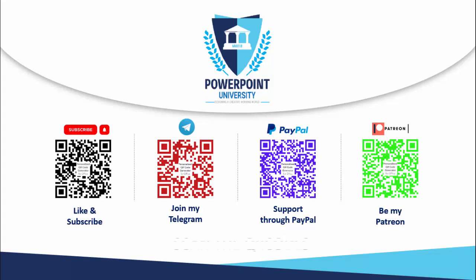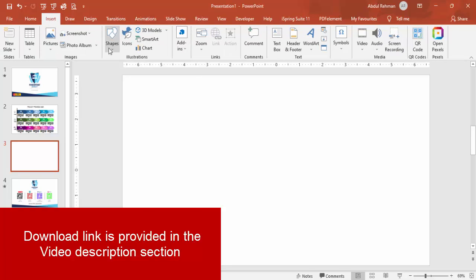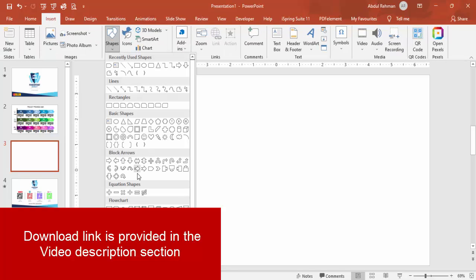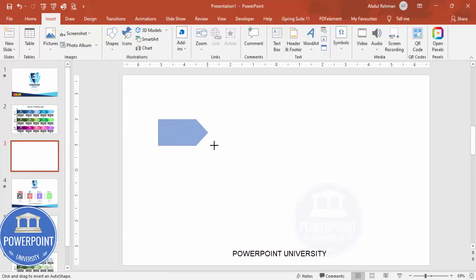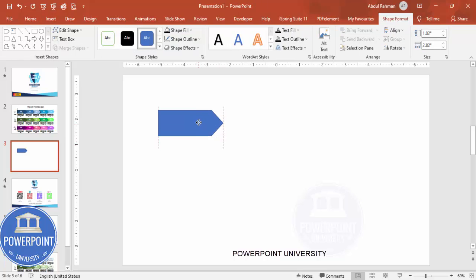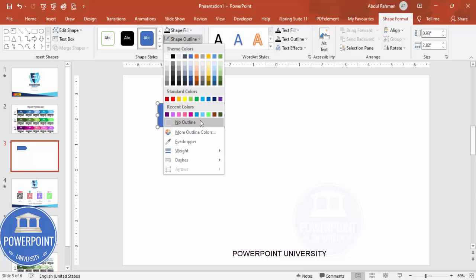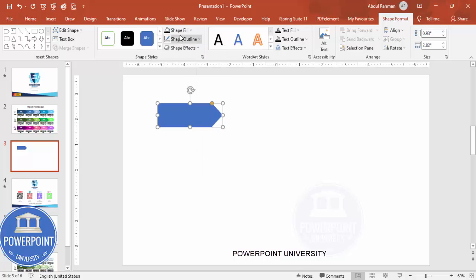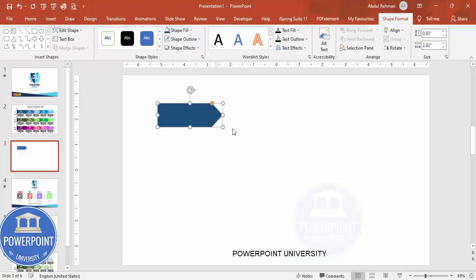Let's start the tutorial. Add a new slide, go to Insert > Shapes, and from the block arrows choose the arrow pentagon. Draw the arrow pentagon to the height and width you require. Set the shape outline to no outline, and for shape fill choose any color of your choice.